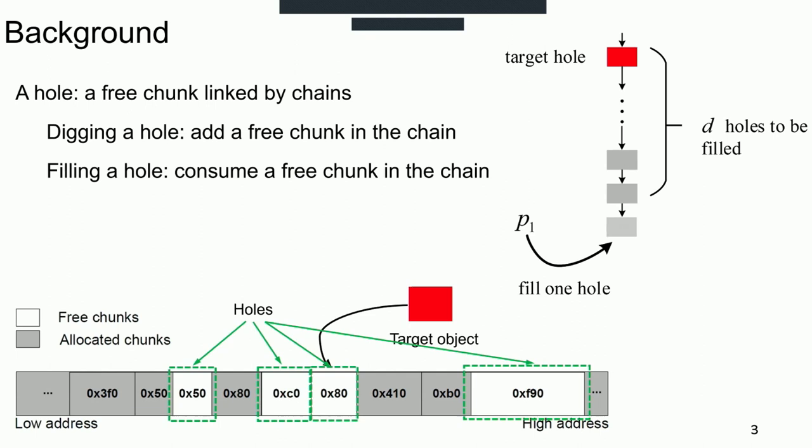The holes in the chain must be allocated by specific order. Digging a hole is to add one free chunk in the chain, and filling a hole is to consume the free chunk in the target chain. Here we show a chain with holes, and we need to fill D holes in the chain to occupy the target hole.